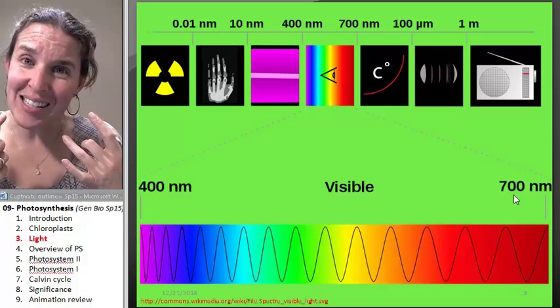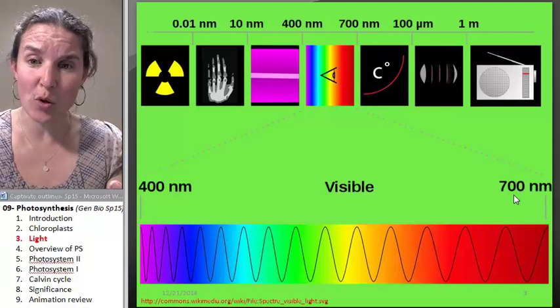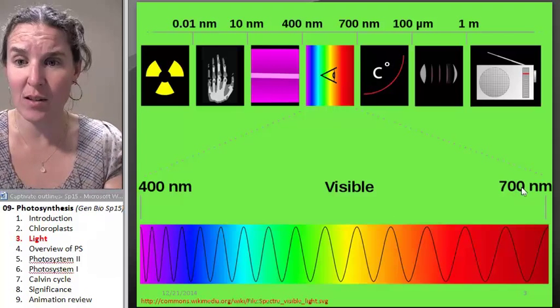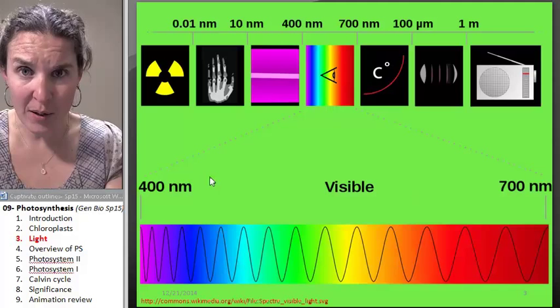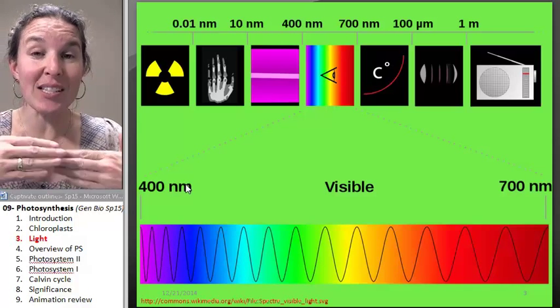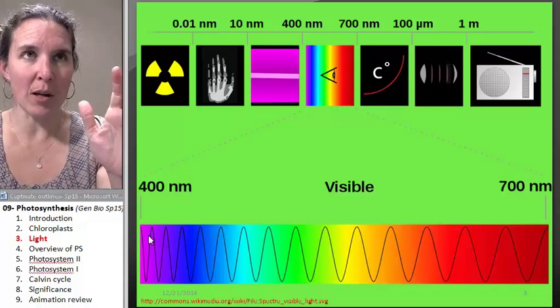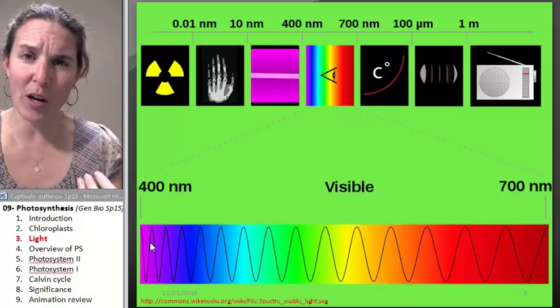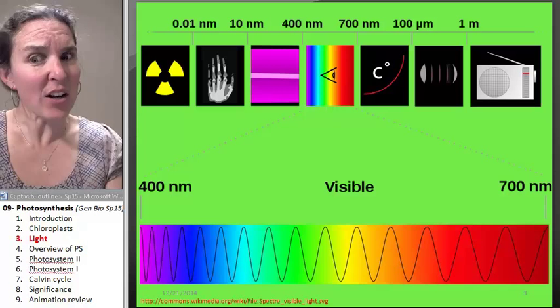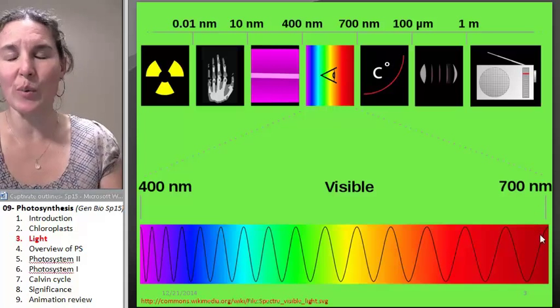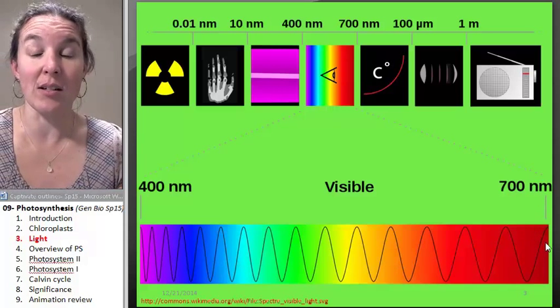But your eyes actually can distinguish between that 300 billionths of a meter and perceives 400 nanometer wavelength as the color purple and 700 nanometer wavelength as the color red. Really? I mean, that's just incredible.